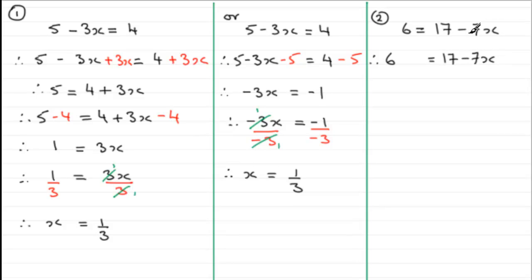So therefore what we have is 6 at the moment equals 17 minus 7x, and I'm going to add 7x then to both sides. So we've got plus 7x here and we'll plus 7x there.